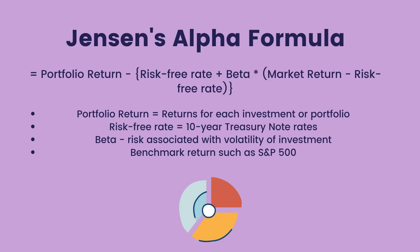The Jensen's Alpha formula equals portfolio return minus risk-free rate plus beta times (market risk minus risk-free rate), where portfolio return equals returns for each investment or portfolio, risk-free rate equals the 10-year treasury note rates, beta equals the risk associated with volatility of investments, and benchmark returns such as S&P 500.